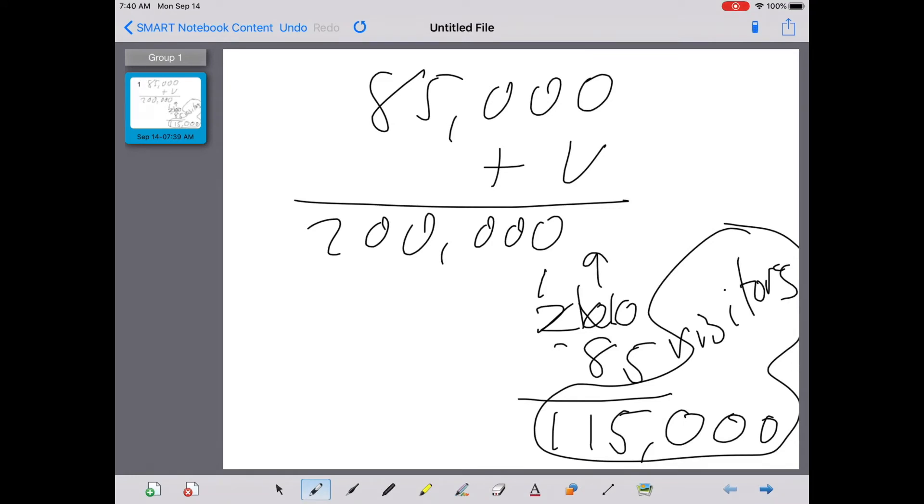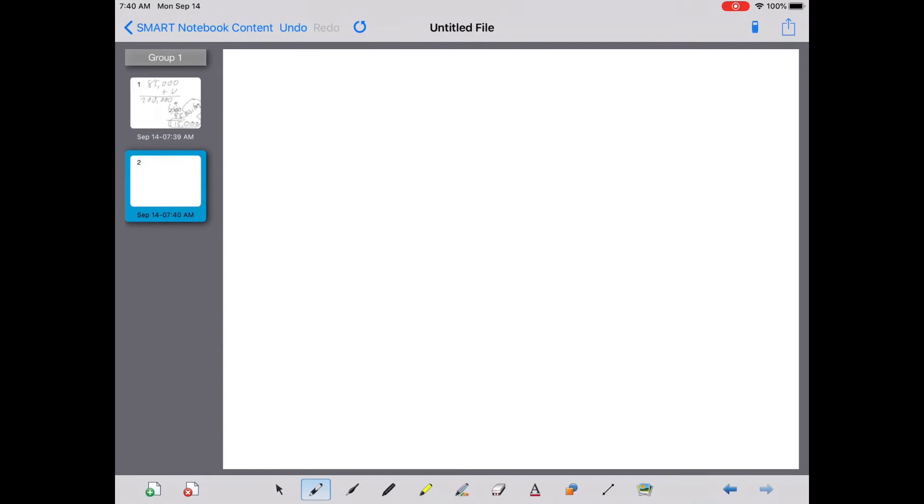Okay, so missing something in addition, solve it through subtraction. Number two, Sid returned from the store with $12.47. He had spent $98.03 on groceries. How much money did he have when he went to the store? So he had some money. He spent $98.03. What remained was $12.47. What did he start with? Missing the first in subtraction. I add them together.